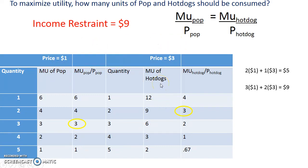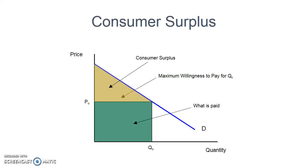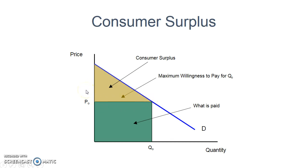After you have a problem like that, you can take it a step further and apply consumer surplus. Consumer surplus is the benefit one receives for participating in the market — you're willing and able to pay a higher price, but you don't have to because the equilibrium price is lower. That difference is your consumer surplus.